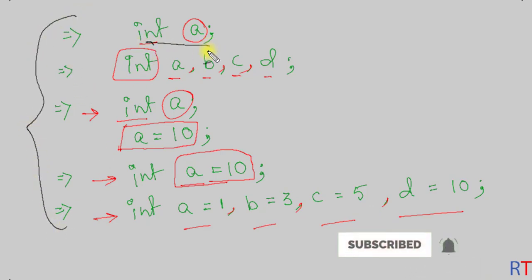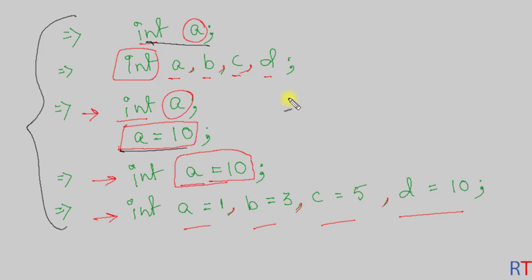So this is the way we can declare a variable and also initialize it in C++ programming. Hope you understand the concept — we'll see you in the next one, thank you.